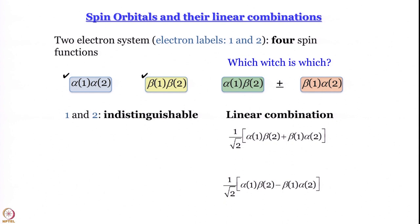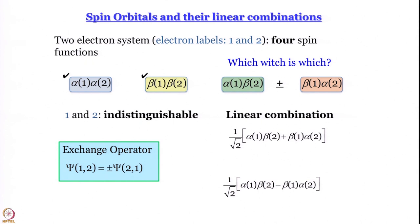We take these two linear combinations to develop the discussion of why they are important — we bring in the concept of symmetry. An exchange operator interchanges the labels 1 and 2. When you apply the exchange operator to ψ(1,2), it can become either +ψ(2,1) or −ψ(2,1). We are going to work only with wave functions that are either symmetric (eigenvalue +1) or antisymmetric (eigenvalue −1) with respect to exchange.